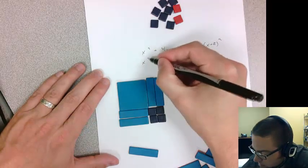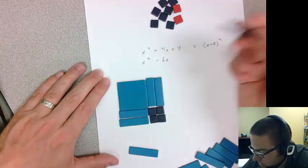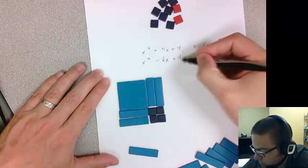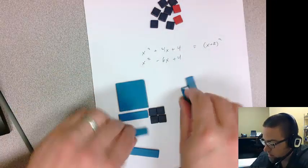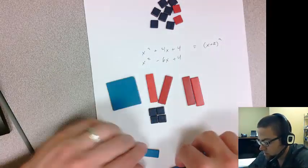Let's try another one. How about x squared minus 6x, let's say it was plus 4. So what would that look like? Something like this.